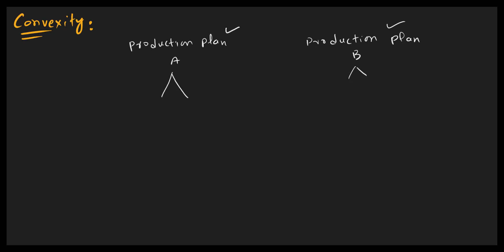Suppose we want to produce y units of output, and for y units of output we have two production possibility plans: Plan A and Plan B. To produce y units of output under Plan A, we need two units of capital and four units of labor. Under Plan B, we need four units of capital and two units of labor.